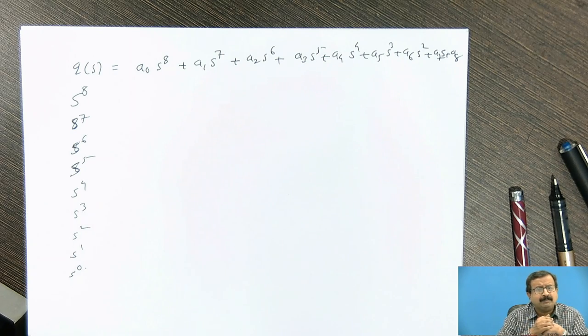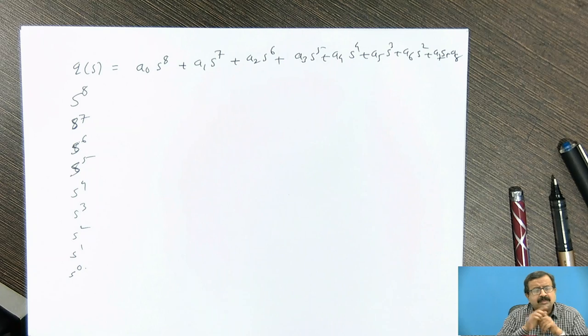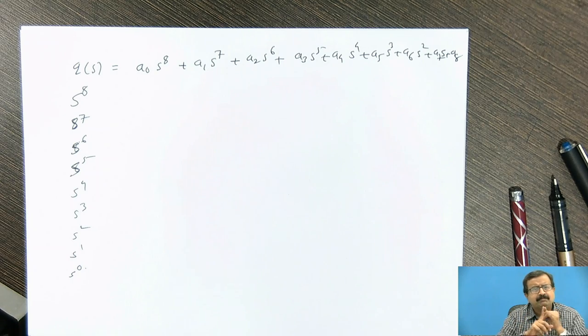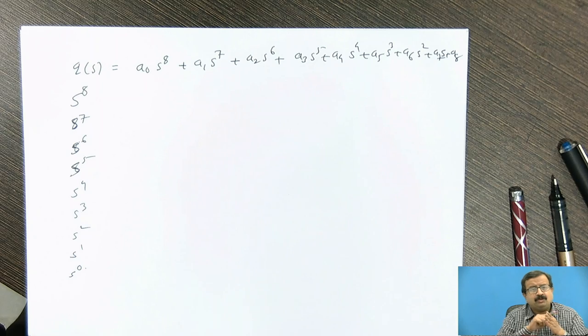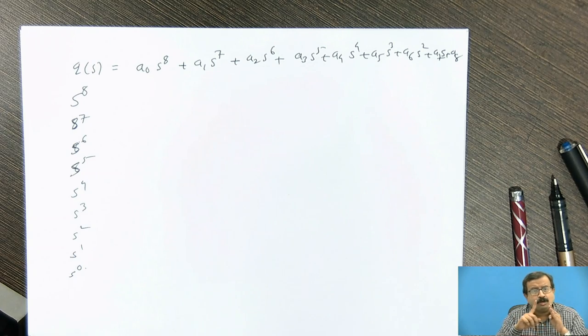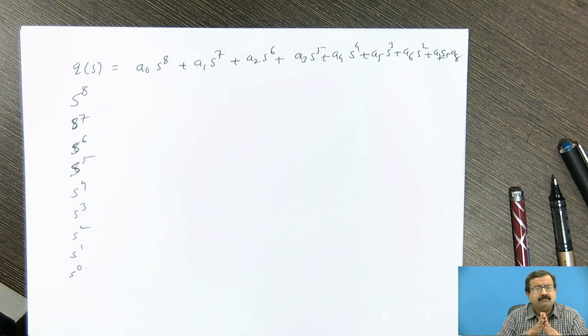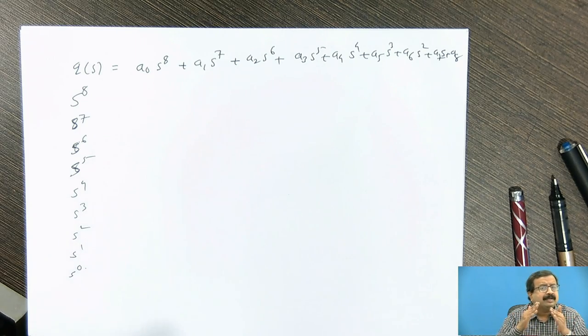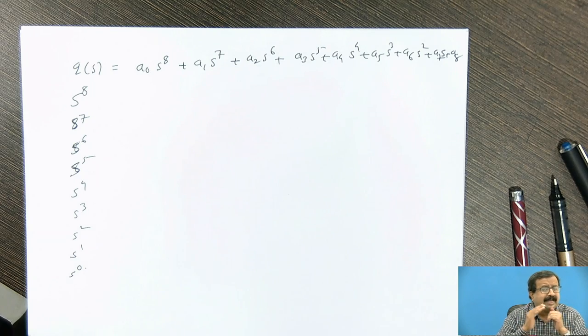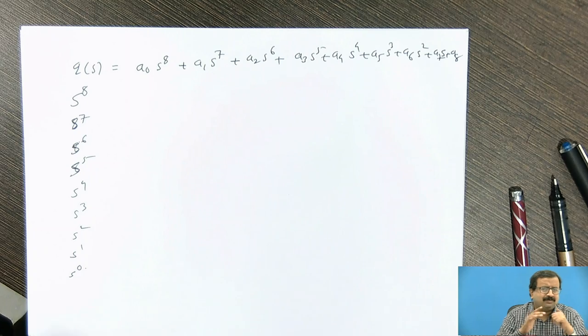But for that particular problem that we had discussed, the polynomial was complete. Complete in the sense it contained cubic term, square term, s to the one term, and s to the zero term. And another thing, necessary condition was that all the coefficients must have same sign. So it also satisfied that condition. So when my equation or a polynomial, which is greater than degree two, is not guaranteed stable if it satisfies necessary condition. So this is what we are going to learn today.